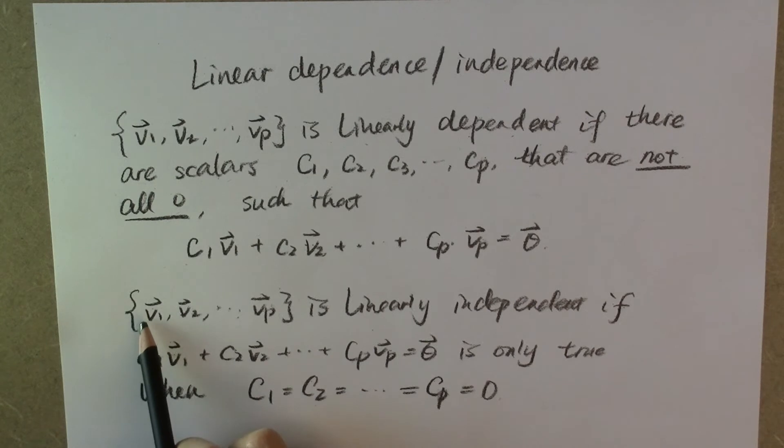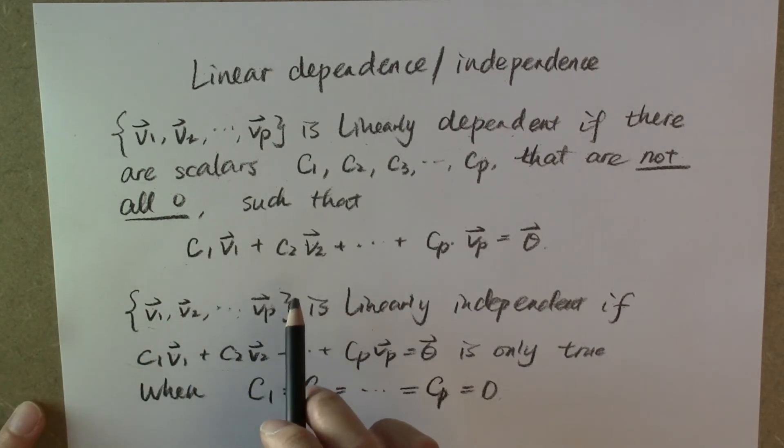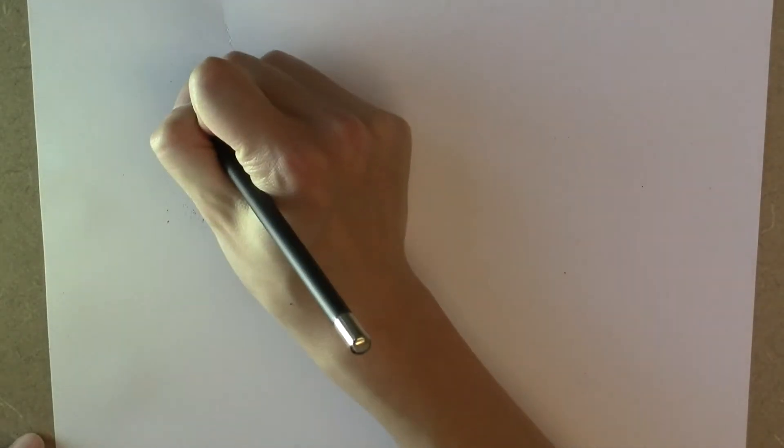To verify that a set of vectors is linearly independent, all we need to do is see if this linear dependence relation implies that all these scalars must be equal to zero. If this implies that, then this set of vectors is linearly independent. So the tricky part is, what is this zero vector?